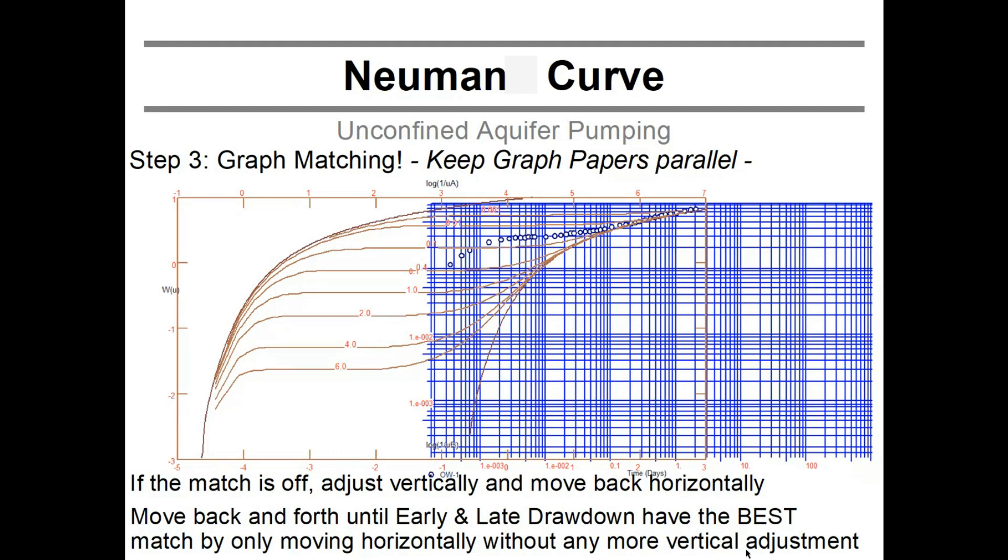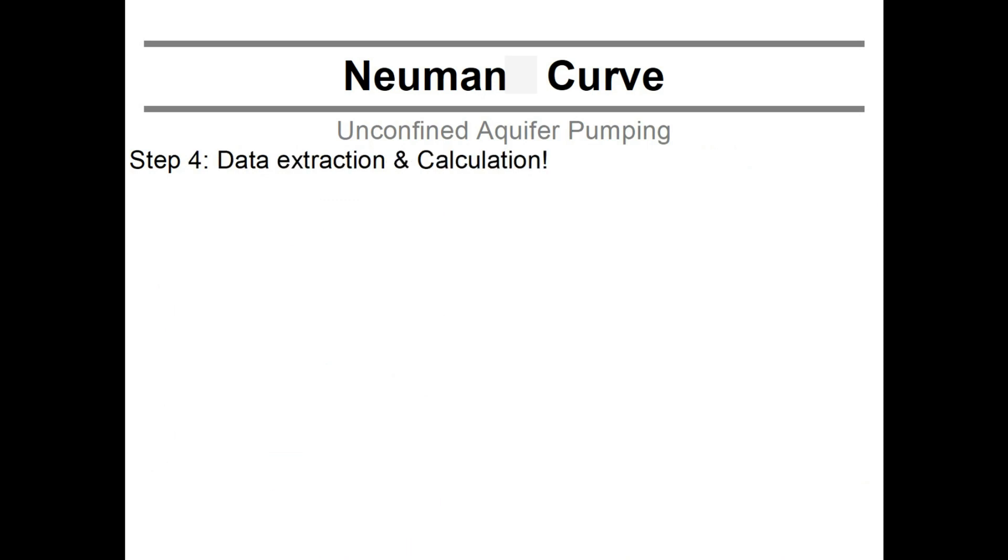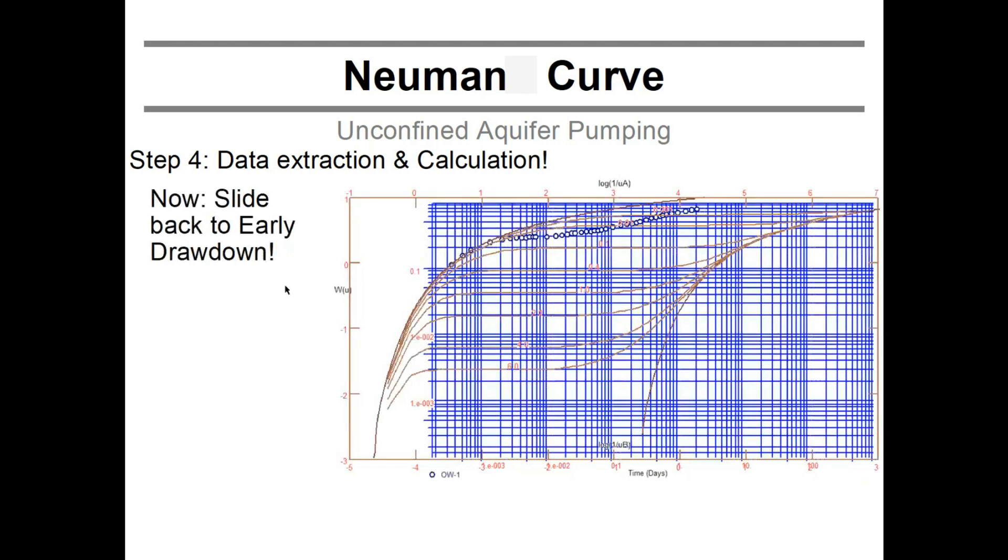Are you done yet? No. This is just the beginning. We now have those two graph papers in position, make sure they don't move anymore, at least not vertically. They still need to be able to move horizontally. Now we need to extract the data and calculate a little bit. So here is what we're doing, is once we have the match figured out, we're going to slide it back to the early drawdown first. No longer move it vertical, only horizontal. So we park this one right there.